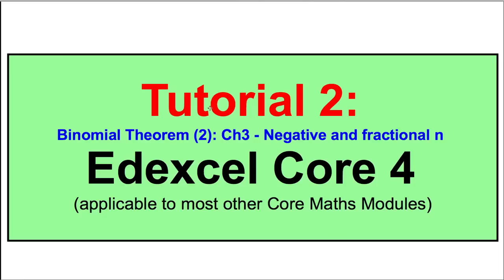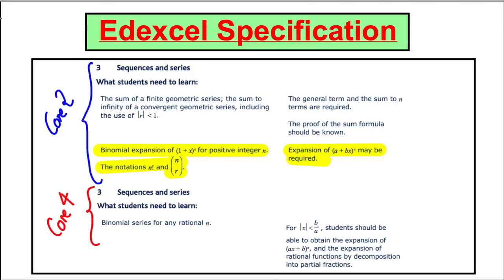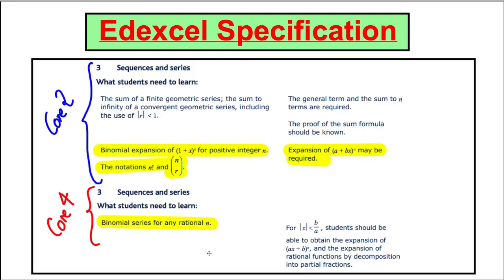This is our second tutorial, applicable for the Edexcel course but fine for any of the Maths A-Level courses. Just to say clearly what Edexcel want: here's what they want for Core 2, and we covered off what was in yellow in Tutorial 1. Now for Core 4, we need to know the Binomial series for any rational n. We're going to work on that mostly today and deal with one more part in the next video.